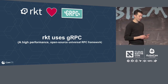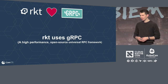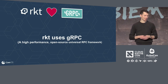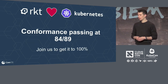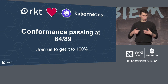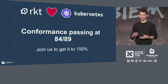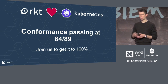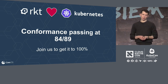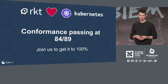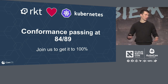Rocket also uses some of the CNCF technologies like gRPC as its RPC system. And today there's been some talk about how we've helped through the Rocket project drive a few different initiatives inside of Kubernetes. One of which is that with Minikube and Kubernetes today, you're able to run almost a fully working Kubernetes system using Rocket as the execution engine underneath. We have 84 out of 89 conformance tests passing today, and we would love all of your help to get to 100%.